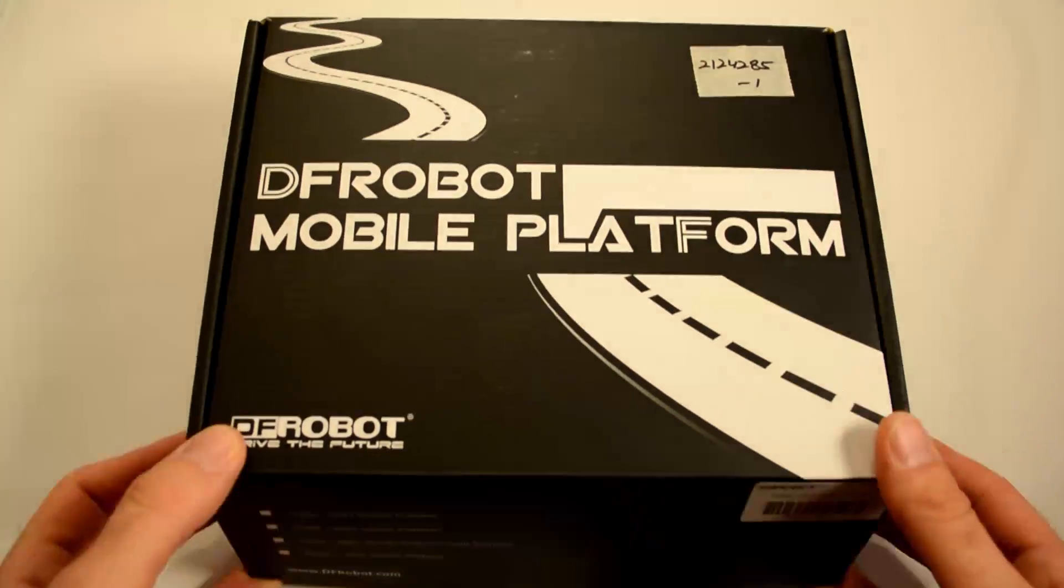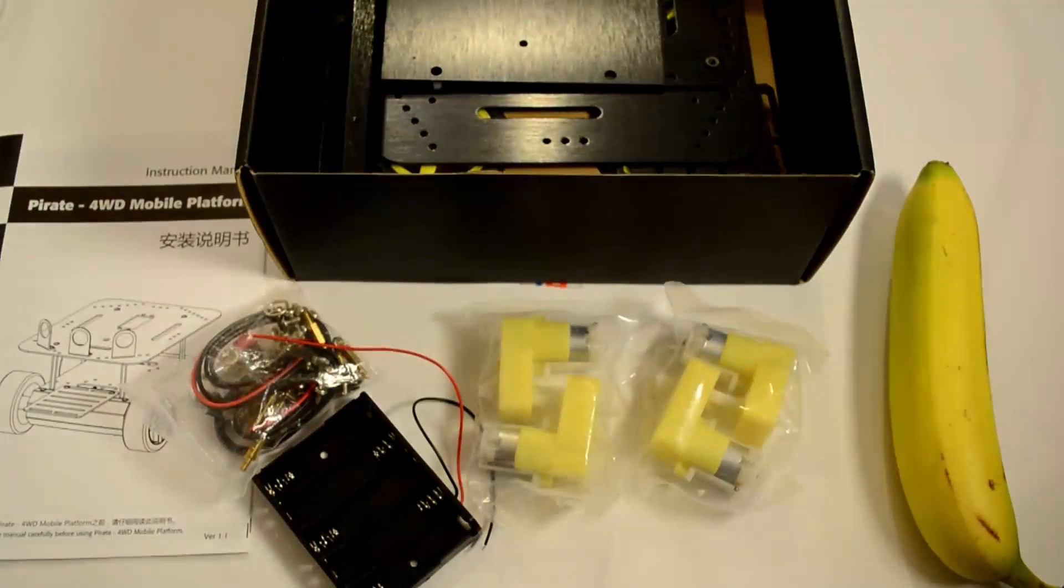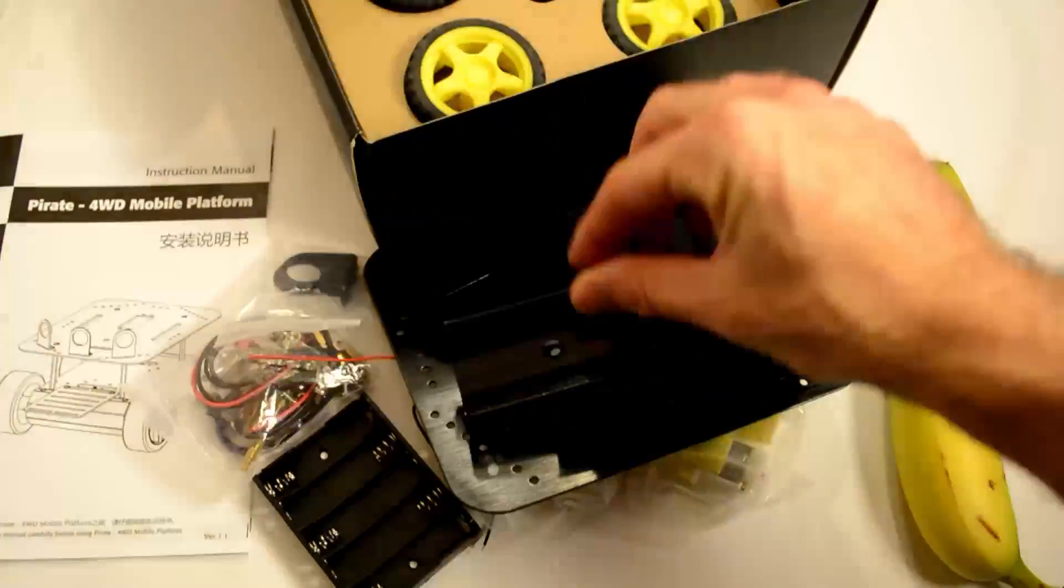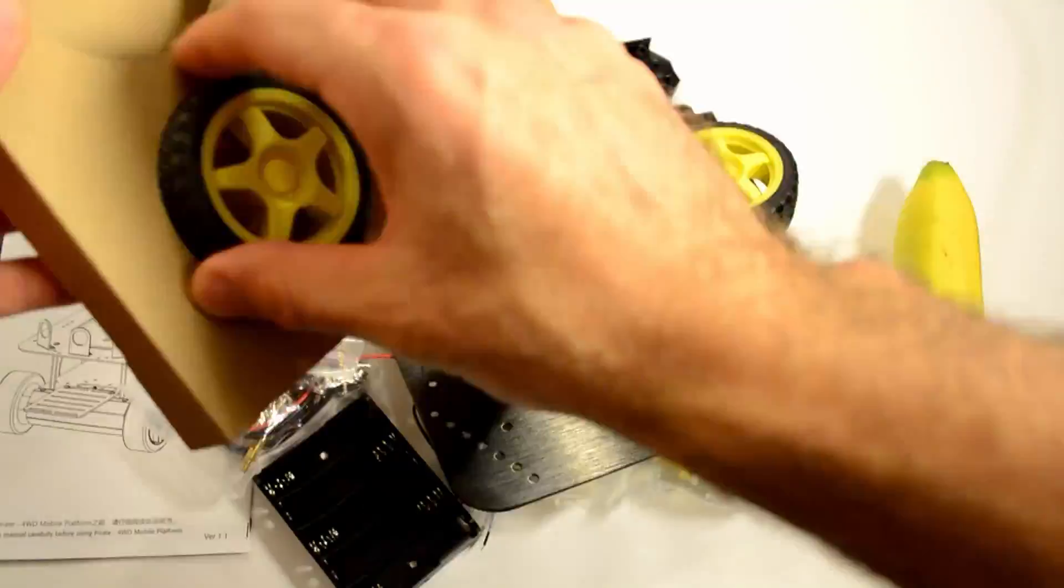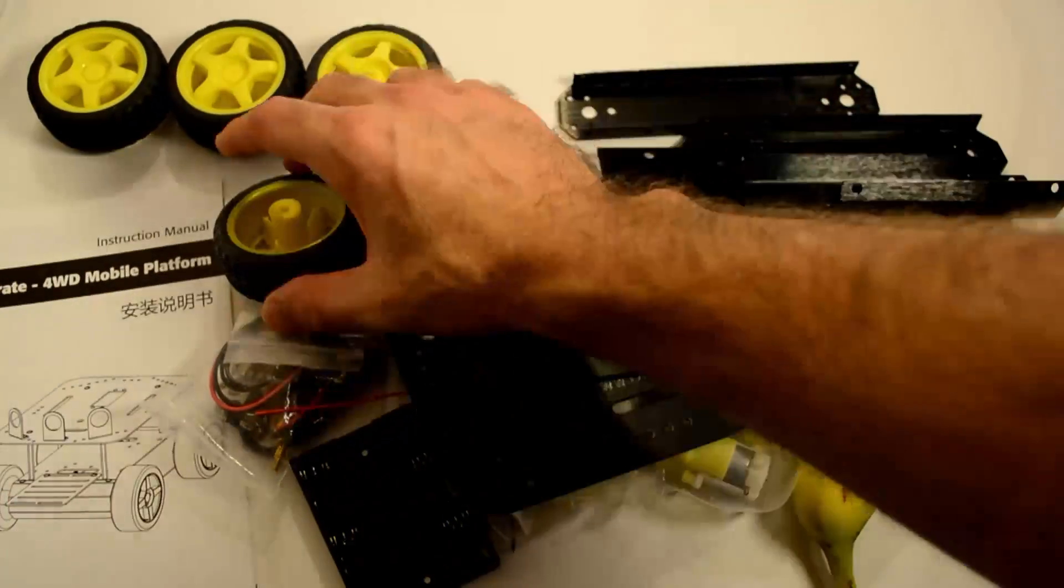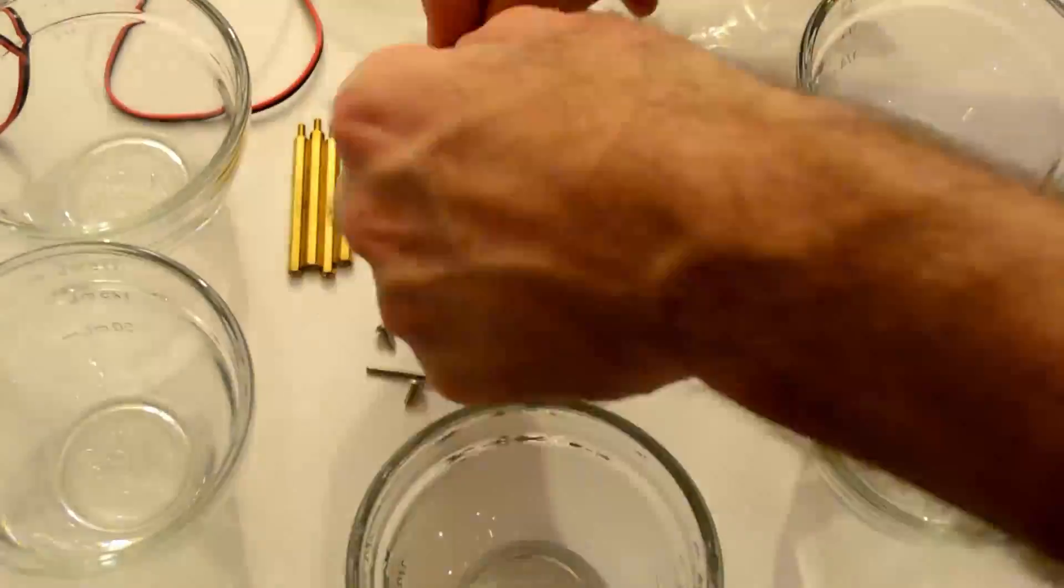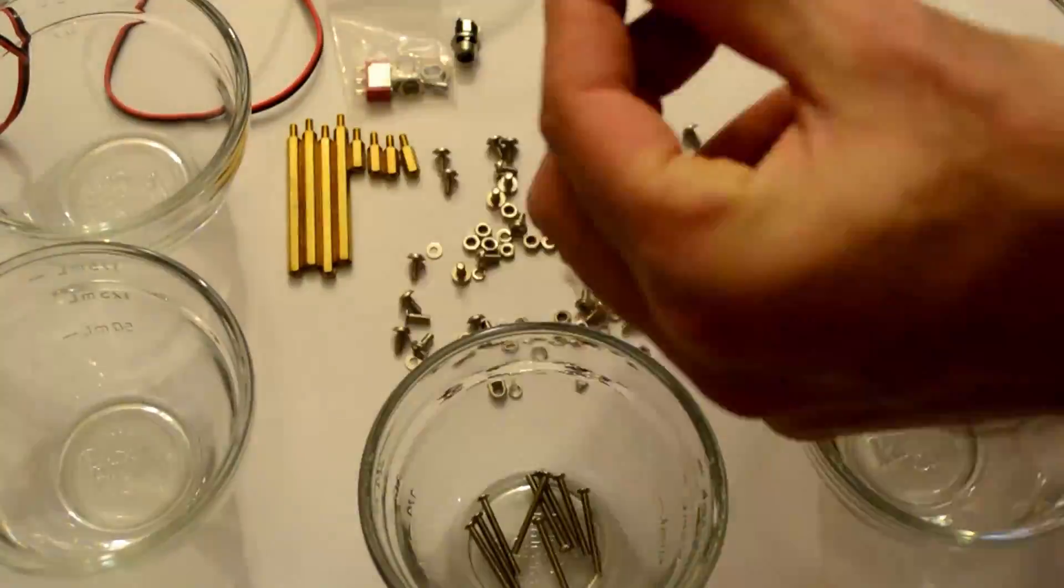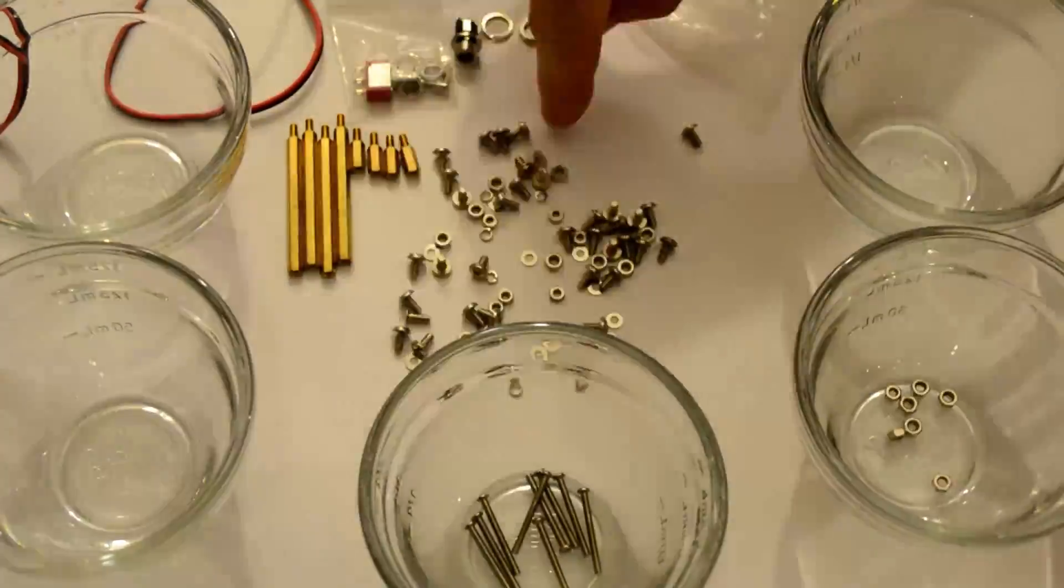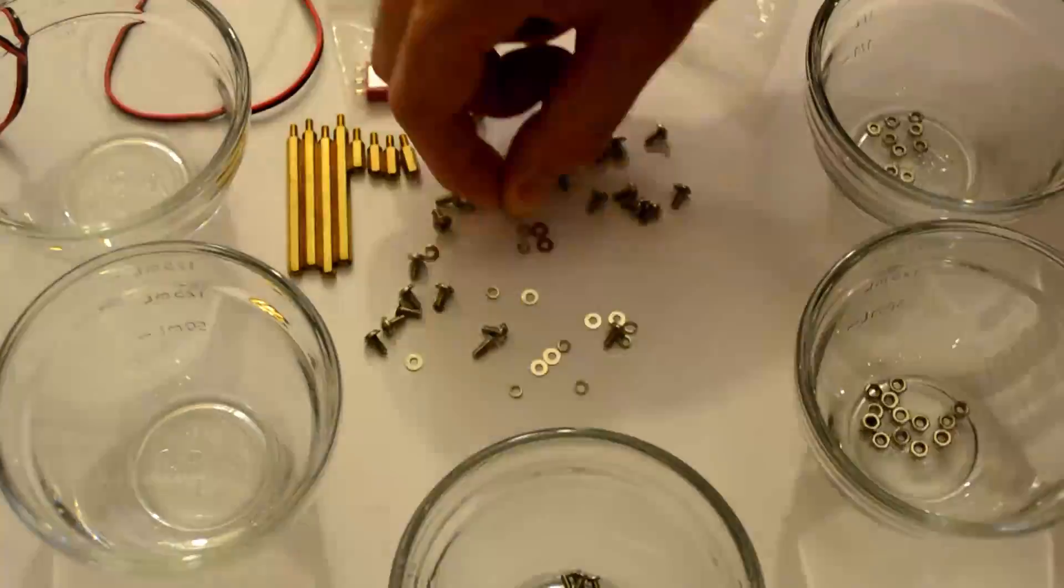So the first thing that you'll want to do is inventory all the components that you got in the box. And this is to make sure not only that you have everything you need, but also to organize them for the building process. I found that using five small cups to organize the bolts, nuts, and washers worked out great. The hardest thing to do is separate the two different types of nuts because they look so similar, though one is slightly larger than the other. And it is really worth doing this ahead of time.